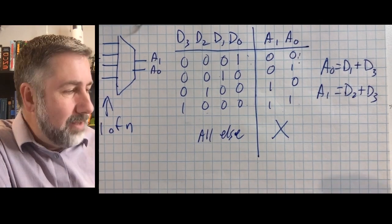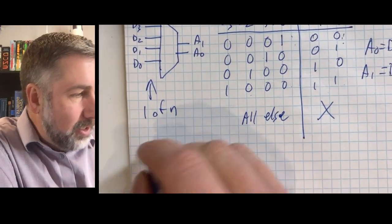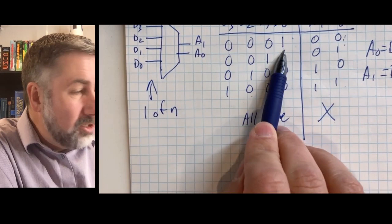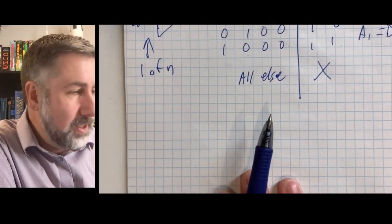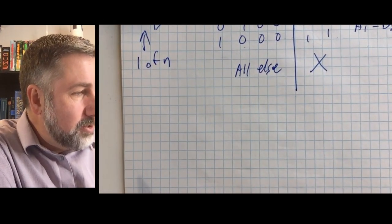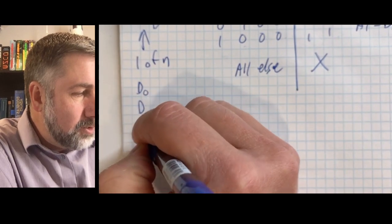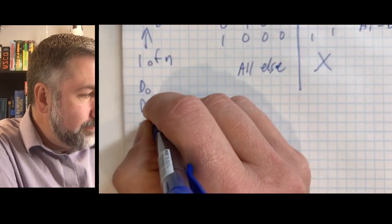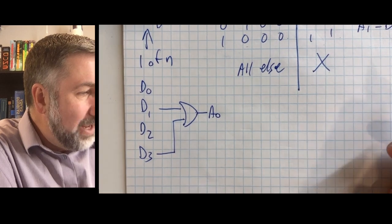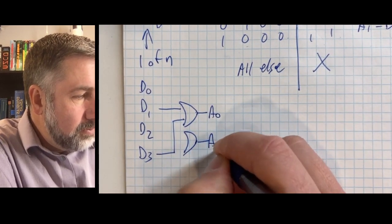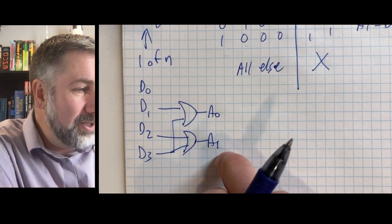It's worth looking at, and then maybe we'll draw out the circuit. So for this encoder, again assuming it's 1 of n, then we can have—in fact, D0 is not even connected because if D0 is 1, we want our outputs to be 0. And so our input is A0, and here's D0, D1, D2, and D3. A0 is just D1 or D3, and A1 is just D2 or D3.